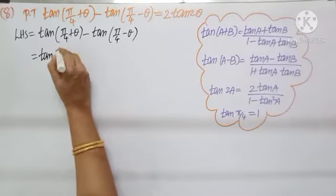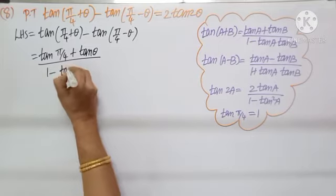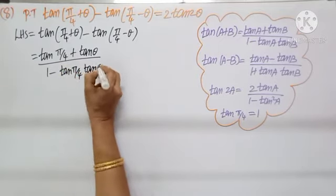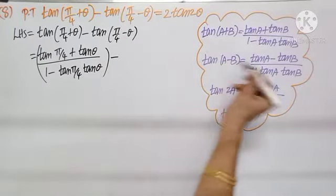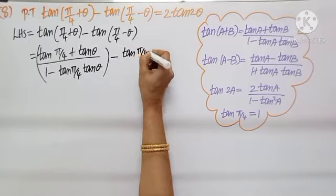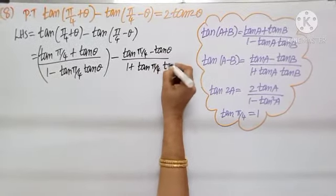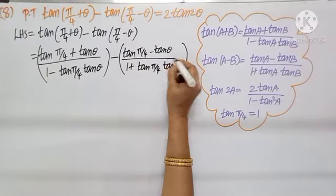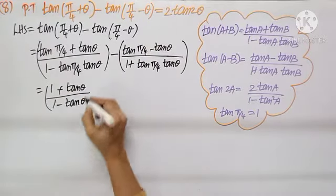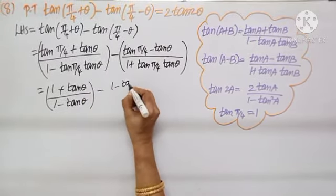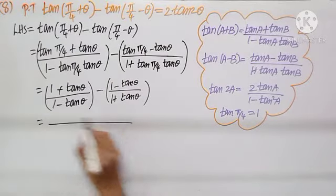tan(a+b) applied to the first term gives tan(π/4) plus tan θ divided by 1 minus tan(π/4) into tan θ. Similarly the second term, tan(a-b), gives tan(π/4) minus tan θ divided by 1 plus tan(π/4) into tan θ.